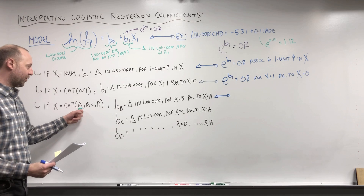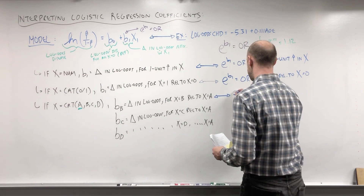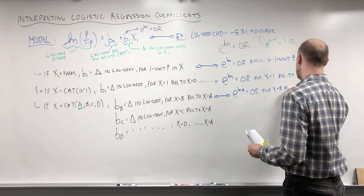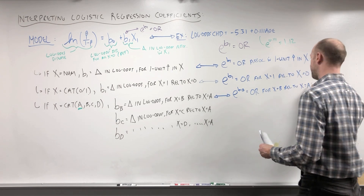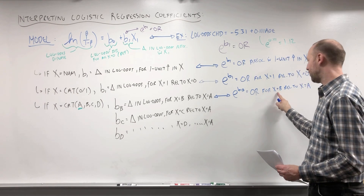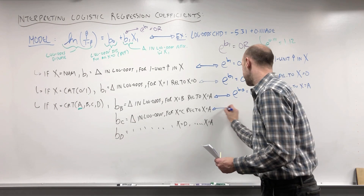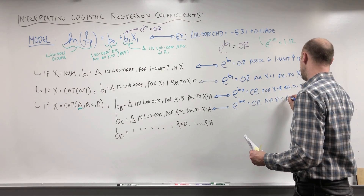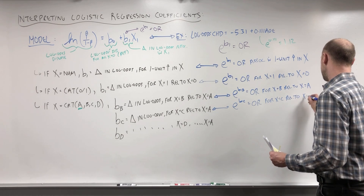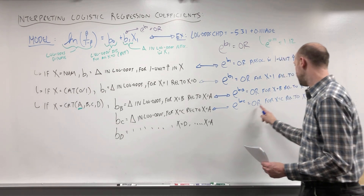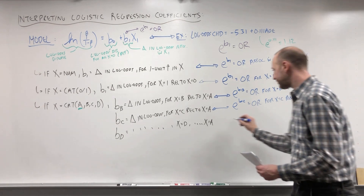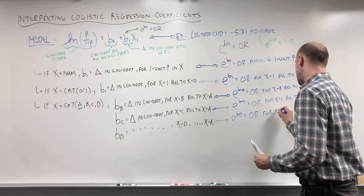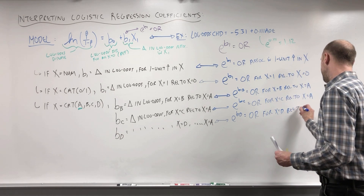If x is categorical with multiple categories, exponentiating the coefficient for group B gives us the odds ratio for x equals B relative to x equals A — the odds of the outcome for someone in category B relative to category A. Exponentiating the coefficient for group C gives the odds ratio for x being group C relative to group A. Similarly, exponentiating the coefficient for group D gives the odds ratio for x being group D relative to group A.